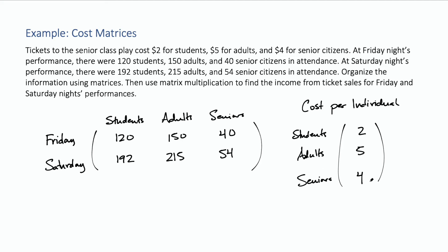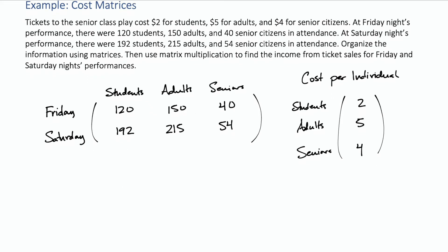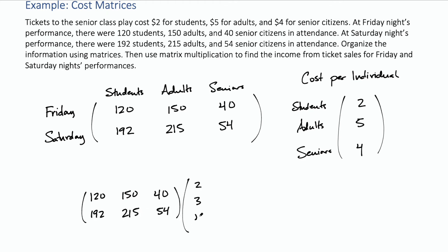So there's our organization in two matrices. We can use matrix multiplication to find the income from ticket sales, because the columns of the first matrix match the rows of the second. So we multiply the matrix [120, 150, 40; 192, 215, 54] by the column matrix [2, 5, 4].